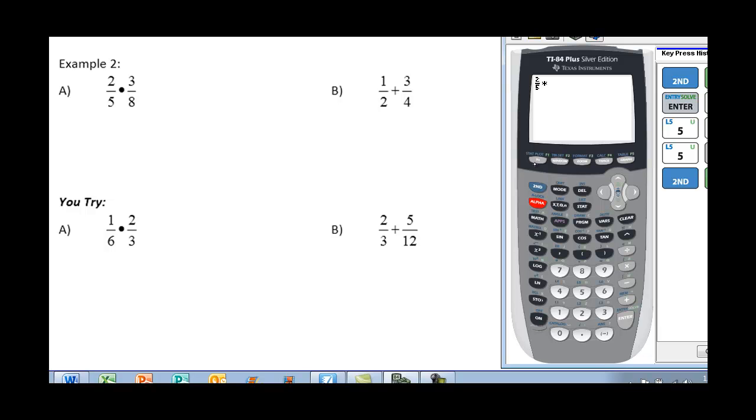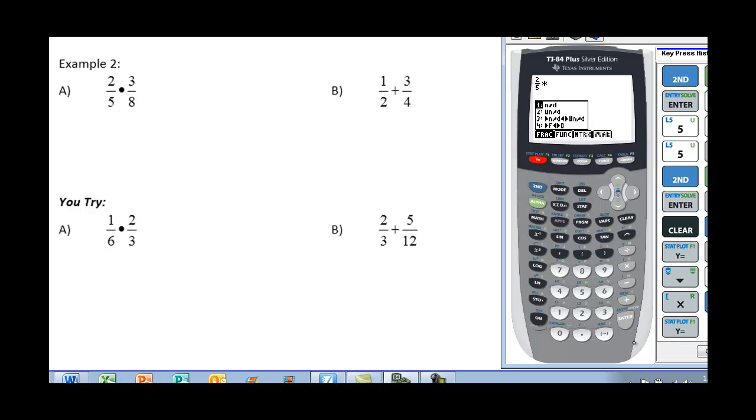And then we're going to do that process again. So again, 2nd, alpha, Y equals. Enter there. And we have 3 eighths. So after you enter that 8, make sure again you arrow over. And then you're going to hit enter. Okay, your answer is in fraction form. So you should have 3 20ths as your answer.